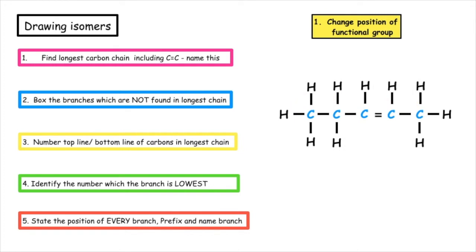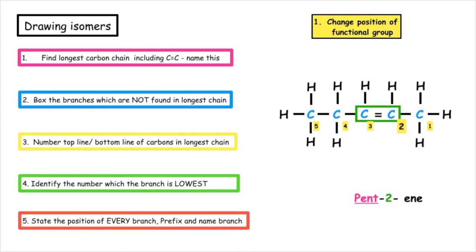The easiest way to draw your first isomer of an alkene is to change the position of the carbon-to-carbon double bond within the chain. Here, we can see the position of the double bond has changed. I still have five carbons in my longest chain. I'm going to number the top line and number the bottom line. The lowest position that the carbon-to-carbon double bond can be on is position two, so the name of this alkene is pent-2-ene.